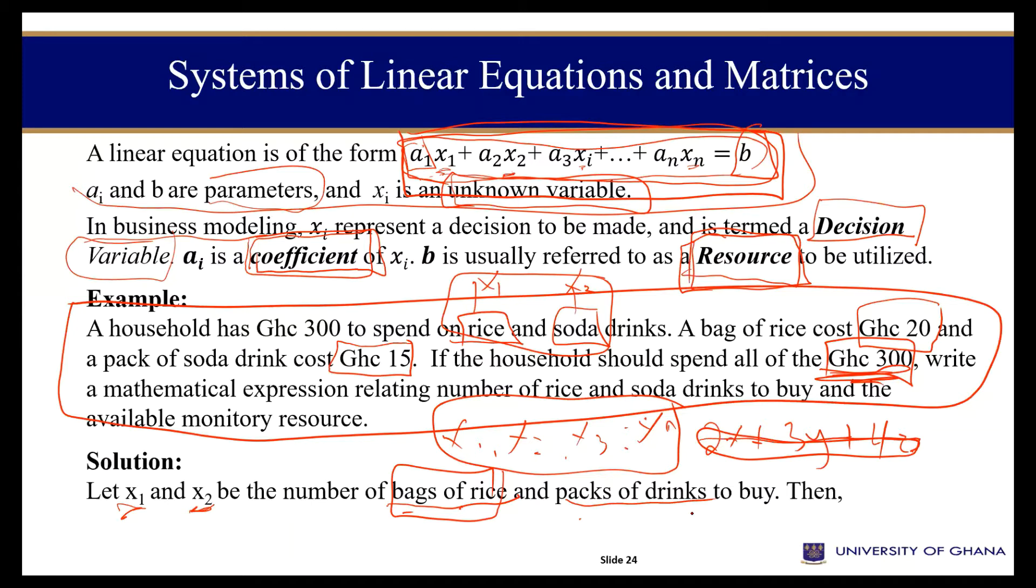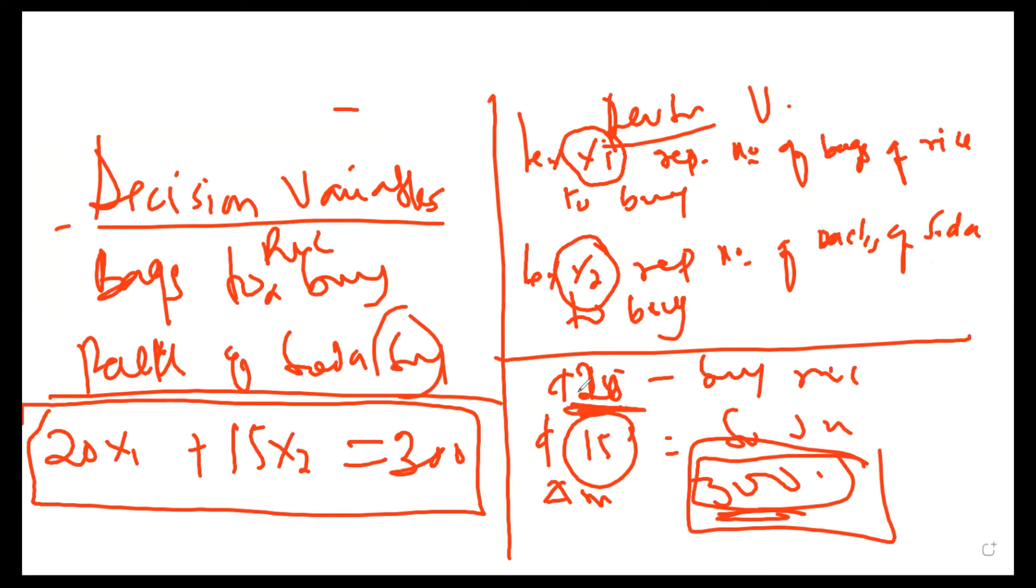Once I know that I should be able to go further to write the equation for this problem. And by that, I said that every decision variable, we have to know the coefficient. The coefficient can be zero or infinity given the problem that you have at hand. In this case, we are told that the unit cost or a bag of rice will cost us 20 cedis and a pack of soda will cost us 15 cedis. If I have 300 to spend, how many should I buy for rice? How many should I buy for a pack of soda?